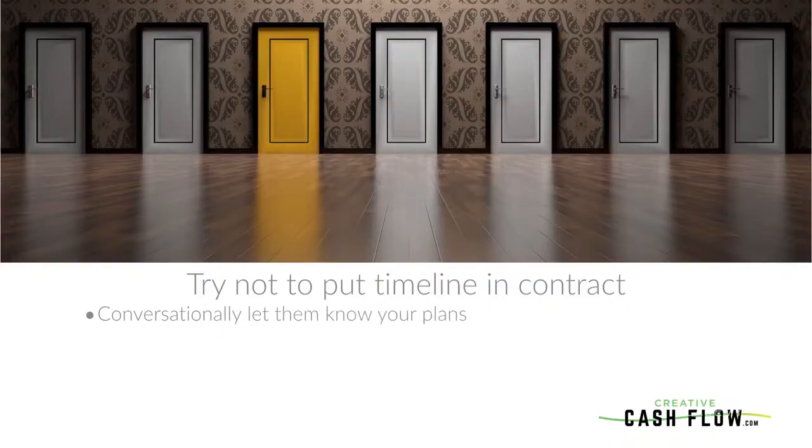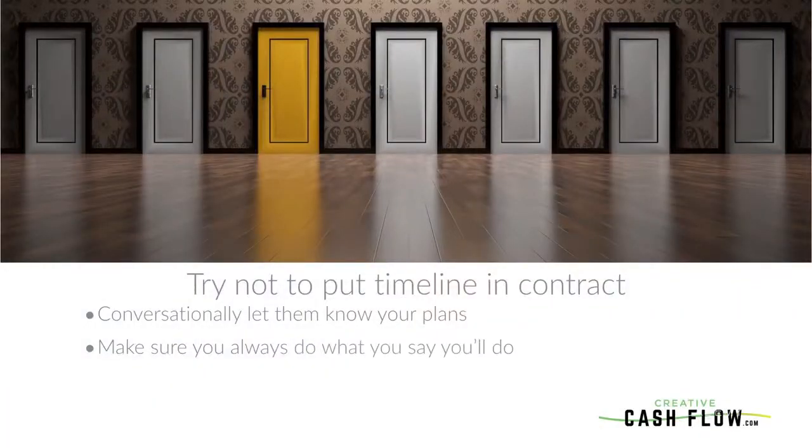Try not to put a timeline in your contract. Conversationally, let your seller know: I understand the situation, I'm going to fix this up, put it on the retail market, list it, find a regular buyer, and when that person buys it, that's when your loan gets paid off. But try to avoid contractually saying 'within six months' or 'within a year I'm going to have this sold.' You want a more long-term solution lined up. Most importantly — do what you say you're going to do, and only say you're going to do something you can actually do. Never promise outside your means. Don't say you'll go retail just to get them to sign, then hold it long-term and say 'sorry, it wasn't in the contract.'